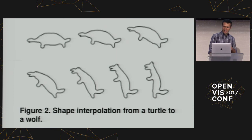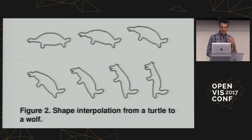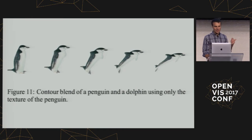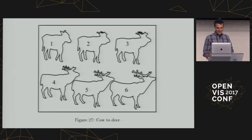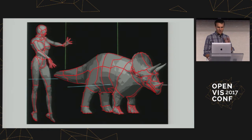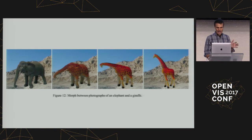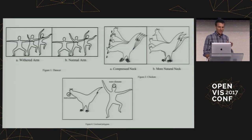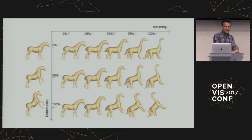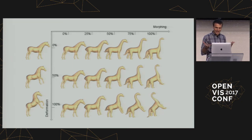Animals are a recurring theme. As you get into Google Scholar deep cuts on shape morphing, you find everyone has their favorite animal for demonstrations: turtles turning into wolves, a penguin turning into a dolphin, a cow turning into a deer, a weird 3D demo of a woman turning into a triceratops, an elephant turning into a giraffe, a paper that's very chicken-heavy with a dancer. My favorite is a matrix showing all possible in-between states of a horse and a brontosaurus — very formal, with scales and everything.